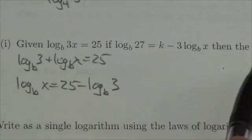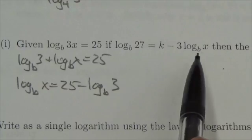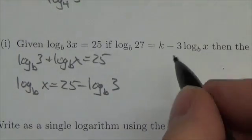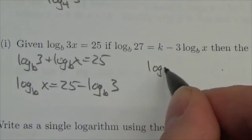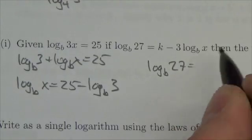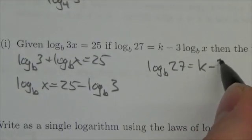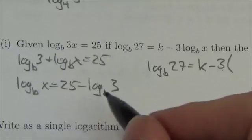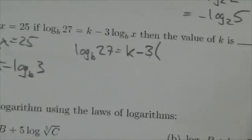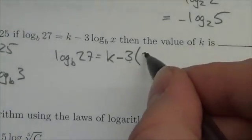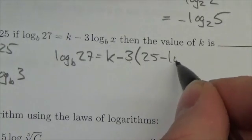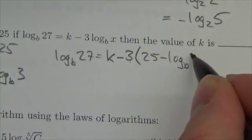Okay, so now I've got an expression for just that piece right there. Now I can make a substitution. So the log base b of 27 is equal to k minus 3 times that expression over here that I found. Okay, so that'll be 25 minus the log base b of 3.